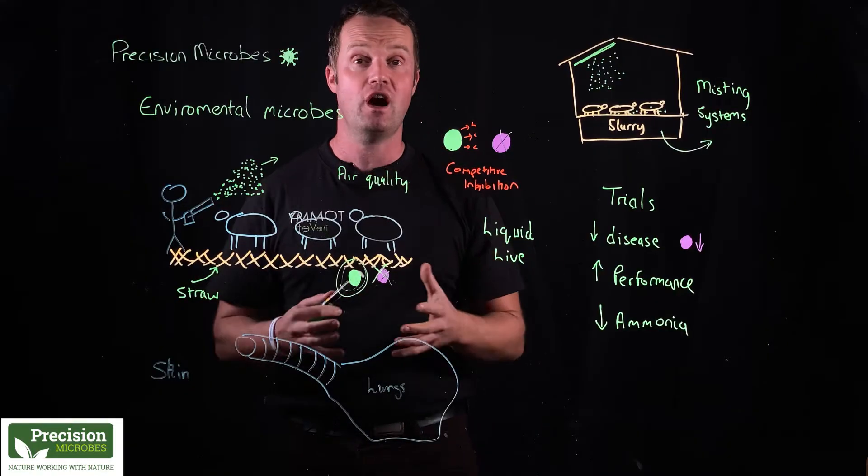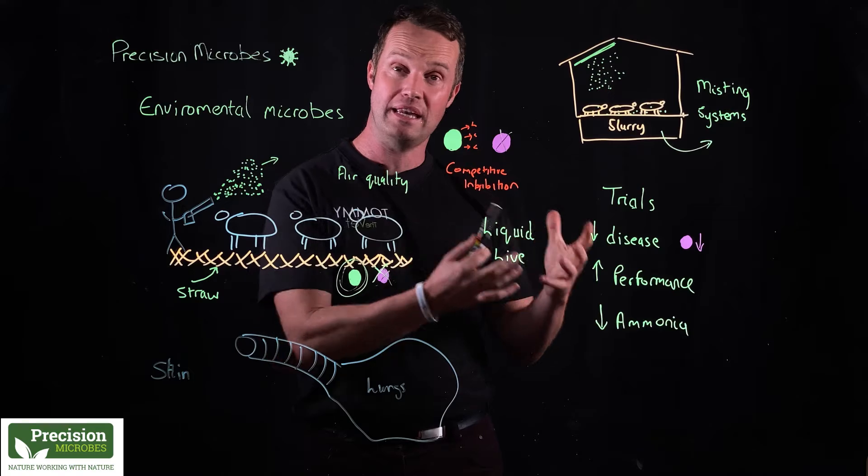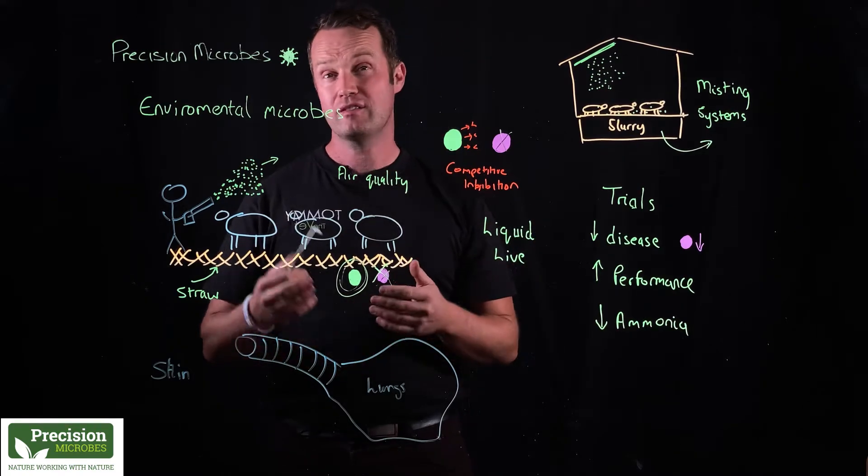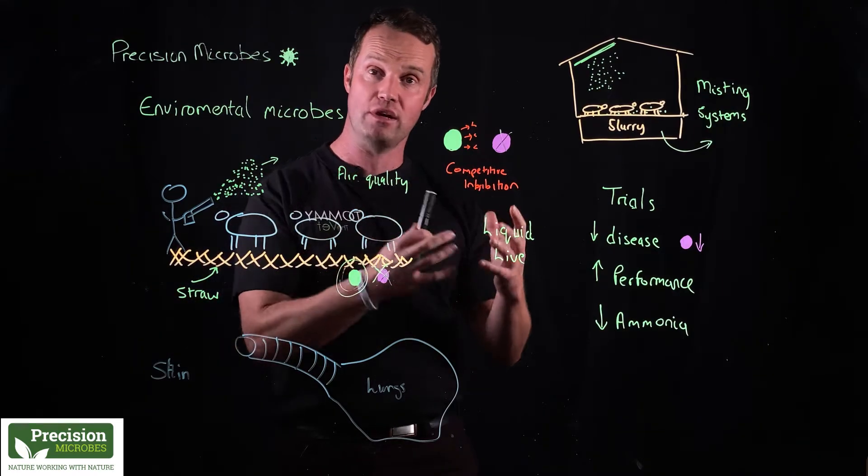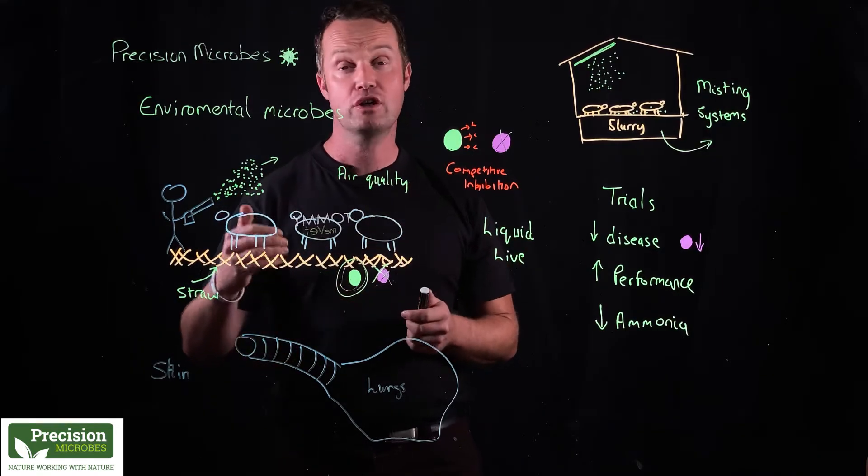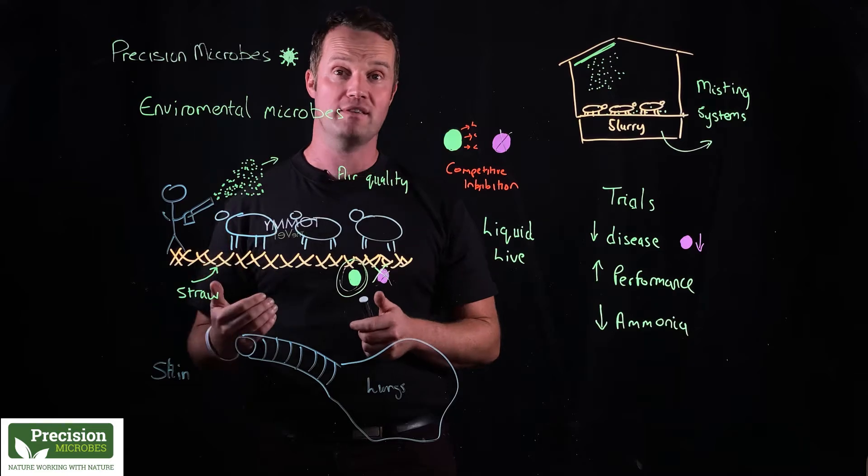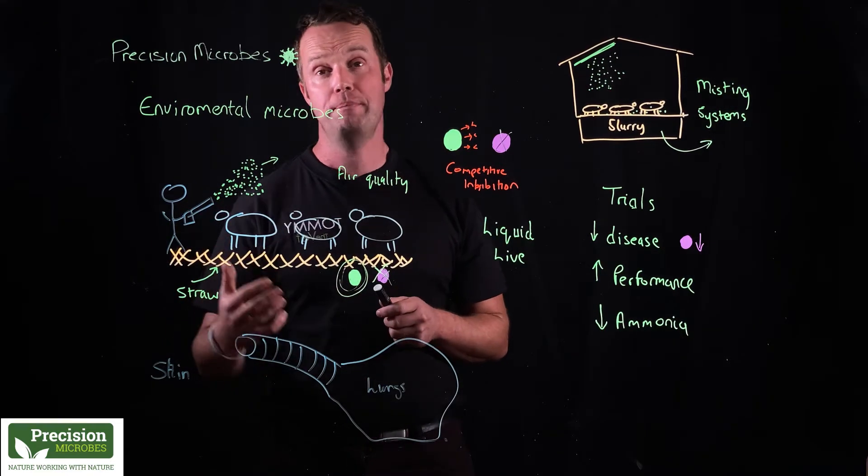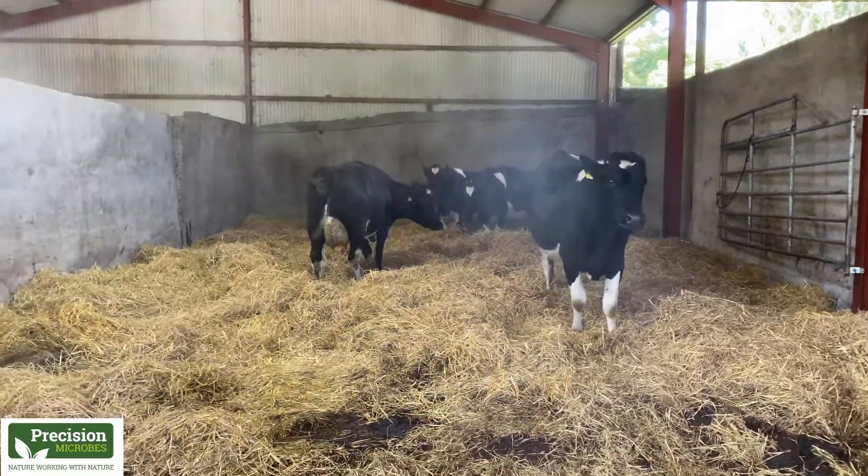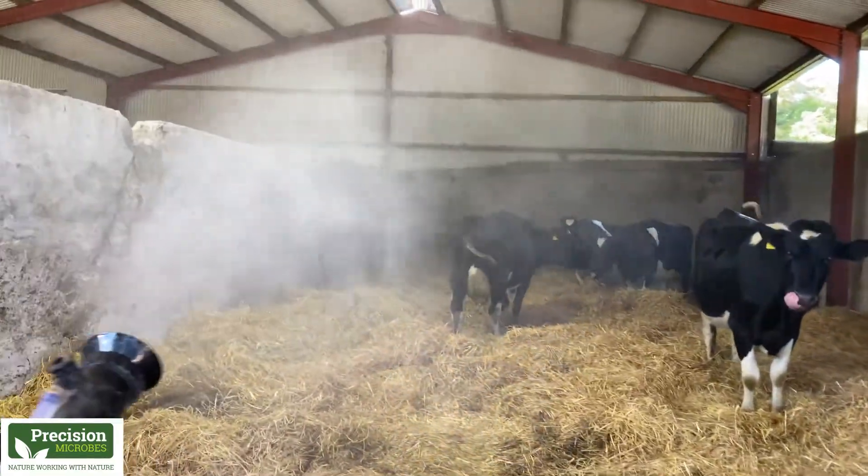It's also improving air quality and reducing ammonia. If we think about bedding and animals, we have a lot of slurry and manure production, and we're actually controlling it by creating a composting effect. I've seen this on farm with a dramatic reduction in straw and bedding usage. Less rotting means we have a better compost, a better fertilizer for our fields.